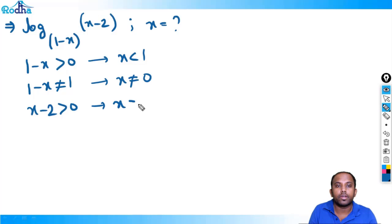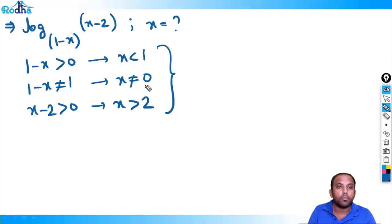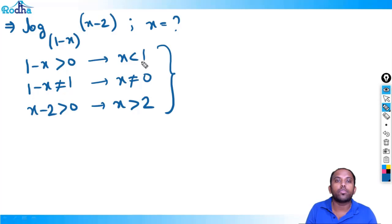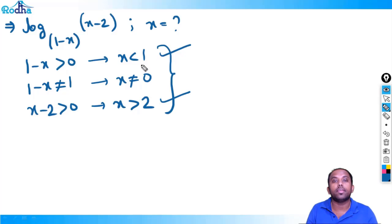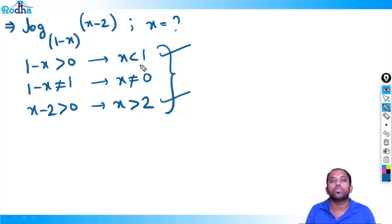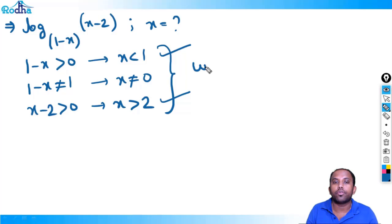If instead we have log_(1-x)(x-2), applying the same conditions: first, 1-x greater than 0 gives x less than 1; second, 1-x not equal to 1 gives x not equal to 0; third, x-2 greater than 0 gives x greater than 2. The combined statement requires x less than 1 and x greater than 2 simultaneously — no value can satisfy both. Therefore this expression is undefined; no valid x exists.